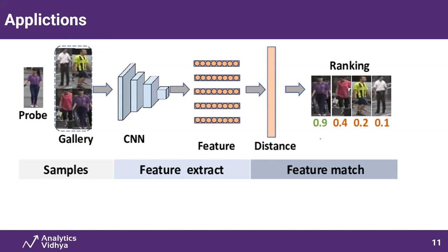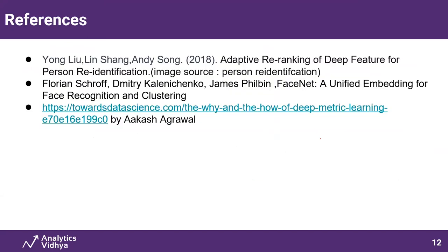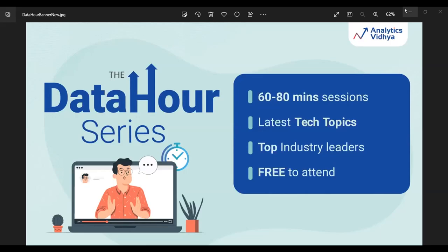That is all about this session. These are the references used. Regarding questions: yes, the source code and presentation will be shared. Regarding NLP applications — yes, similarly there are many embedding models in NLP such as BERT and Word2Vec that can be used for similar applications like vector search. You can use libraries like FAISS, Google ScaNN, or Annoy for faster vector search.